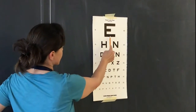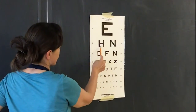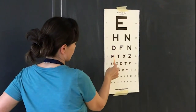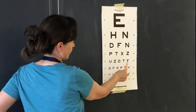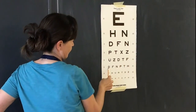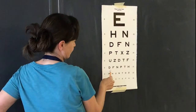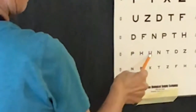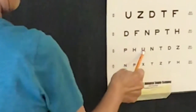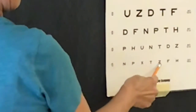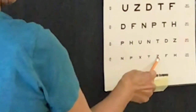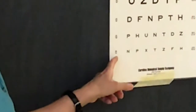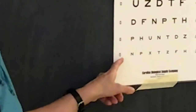With the other eye, she reads: E, H, D, P, F, D, H, U, Z. It's the same — 20 over 15. You can write it down for yourself.